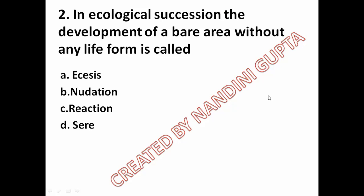We have seen that ecological succession has stages. The first stage is the development of a bare area. This first step is named Nudation. So the correct answer is Nudation.